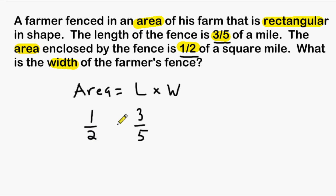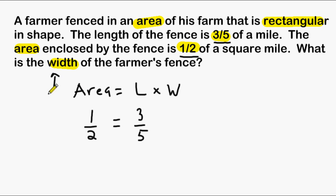In this problem we are not trying to find the area inside the fence because they actually give that to us, so we have to substitute one-half in for the area. Our job is to figure out what the width of the farmer's fence is, so we are just going to bring down our variable w.